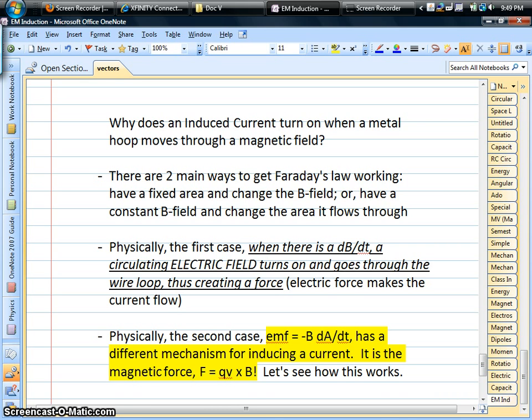Faraday says that as long as your magnetic flux is changing, a voltage is going to turn on, and that means a current is going to turn on. In the lab, we know that these wire hoops get hot, so that's evidence that there's a current flowing.